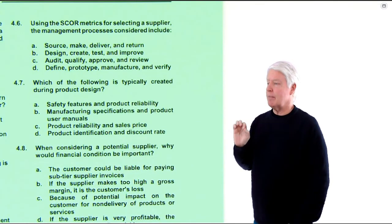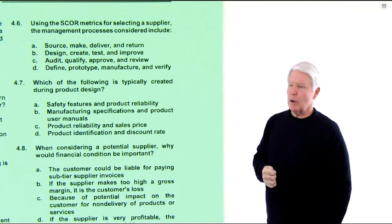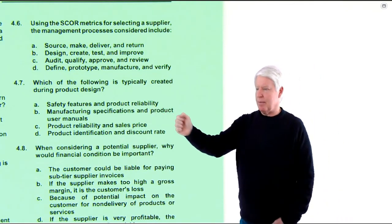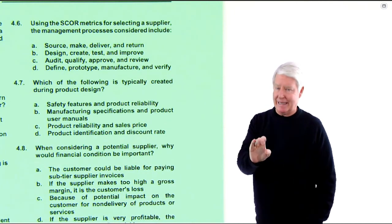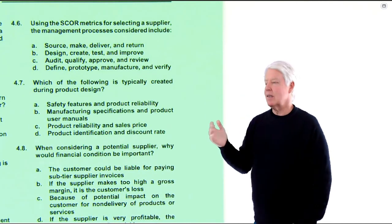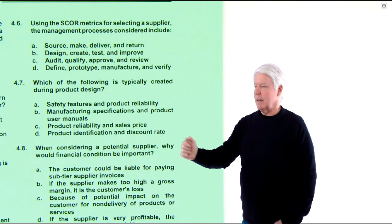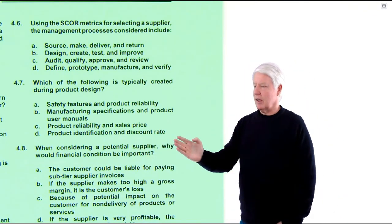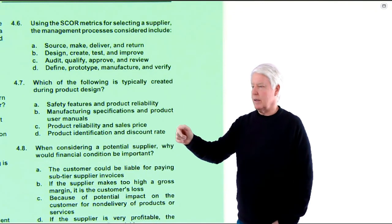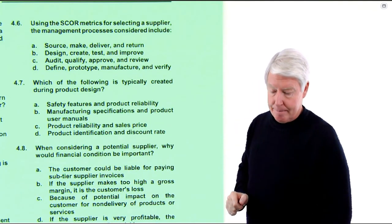Question 4.7: Which of the following is typically created during product design? Safety features and product reliability — yes, that's where you create reliability and safety features. Reliability is definitely created in design. Manufacturing specifications and product user manuals; product reliability and sales price — no, sales price is set by marketing. Product identification and discount rate — no. It comes down to A and C, but A is much better. 4.7 is A, and it is.